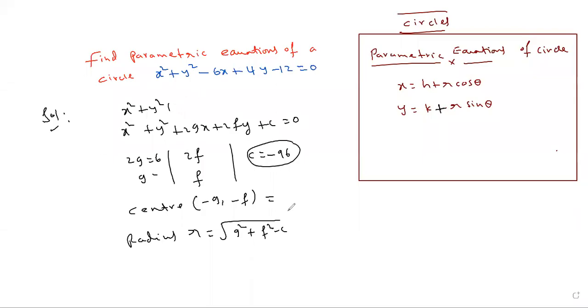Given equation: x² + y² - 6x + 4y - 12 = 0.